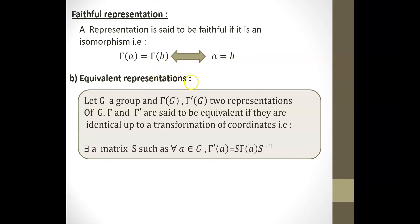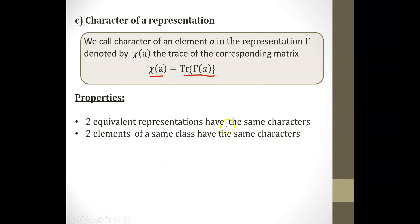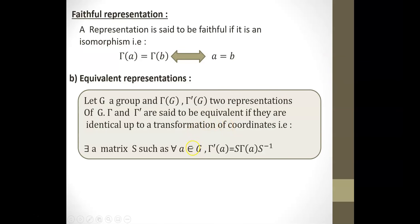Let's introduce the notion of equivalent representation. Two representations Γ(G) and Γ'(G) are said to be equivalent if they are identical up to a transformation of coordinates. Mathematically, this means there exists a matrix S such that for all elements a in G, Γ'(a) = S · Γ(a) · S⁻¹.